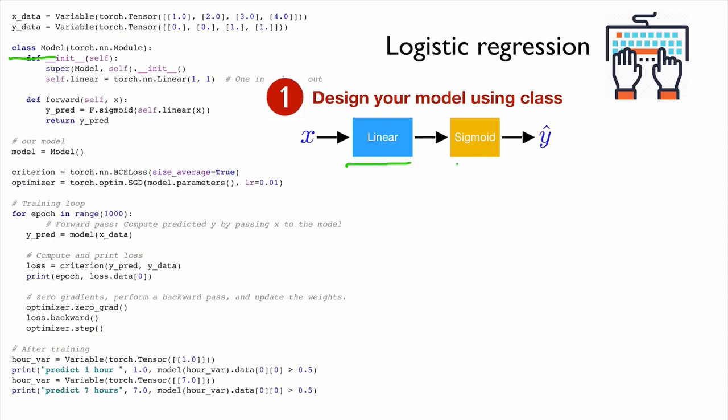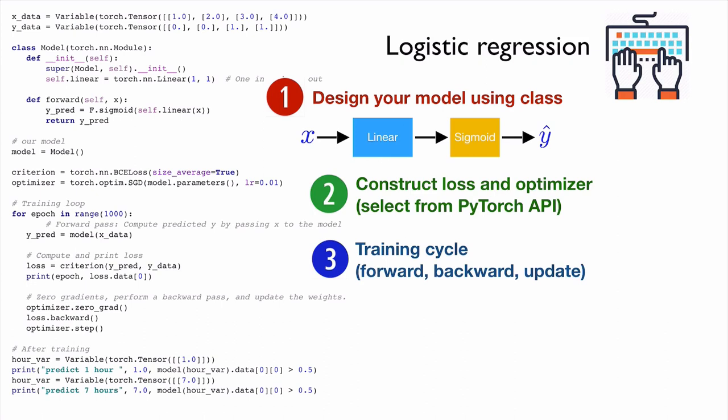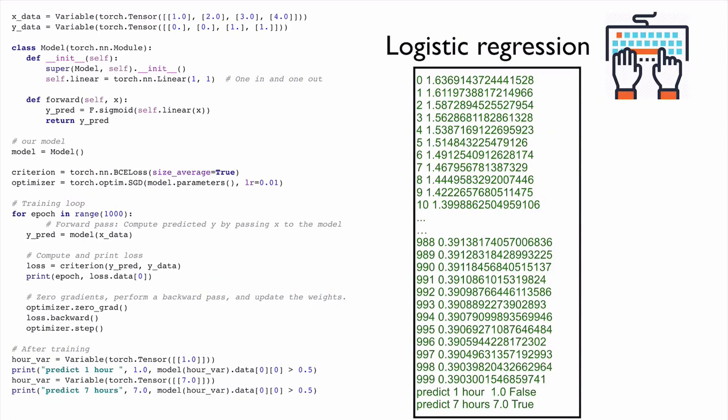In this case, it's linear with a sigmoid. And then we define our loss and optimizer like that. And then we run the training cycle. And that's it. And then let's look at the result. As we expect, as the epoch goes on, our loss value is going to be getting smaller and smaller. And then finally, what we did is that we predict if we study one hour, what is going to be? Are we going to succeed or not succeed? It's going to be fail, false. And then if you study seven hours, of course, you will be successful.